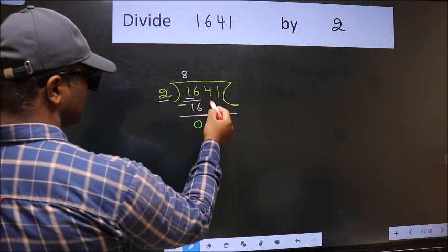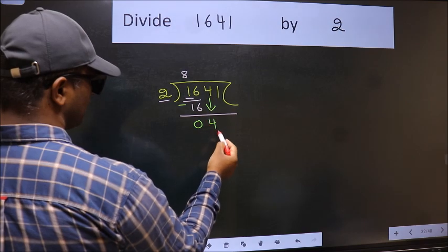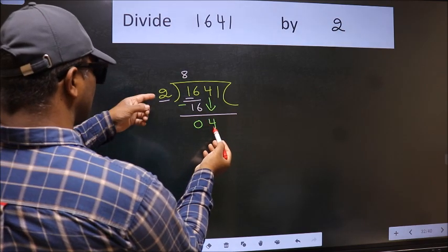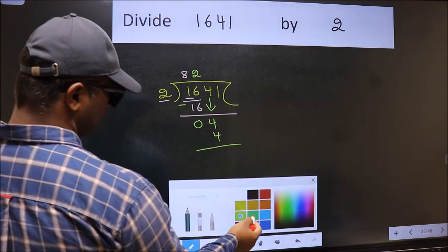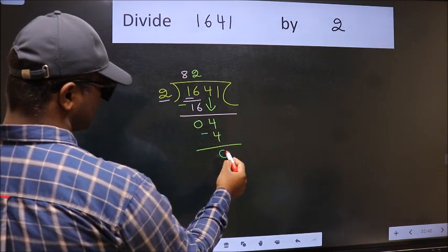After this, bring down the beside number. So 4 down. When do we get 4 in 2 table? 2 times 2 is 4. Now we should subtract. We get 0.